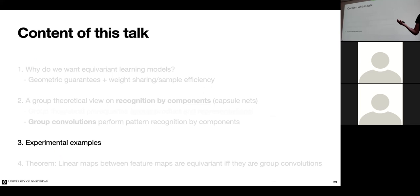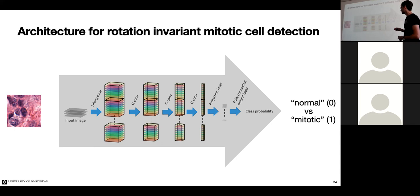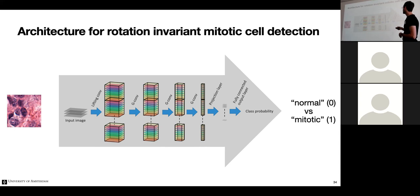Let's apply this in practice. The task is classification of cells as normal or mitotic (pathological). This is an invariant problem — rotating should keep the label the same. The general construction: apply a lifting convolution creating feature maps on the space of positions and rotations, then group convolutions detect patterns in terms of relative placement of features in terms of group transformations — for example, detecting an edge here and there relative to each other at a particular angle.